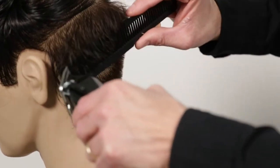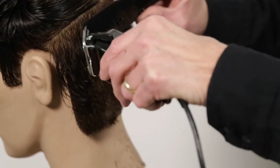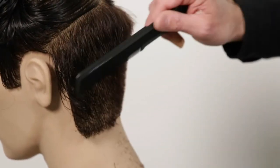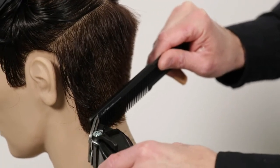You lift the comb, and you pass the clipper. The comb is going to give you the length. In this case, you're going to comb the hair down, place the clipper over your comb.